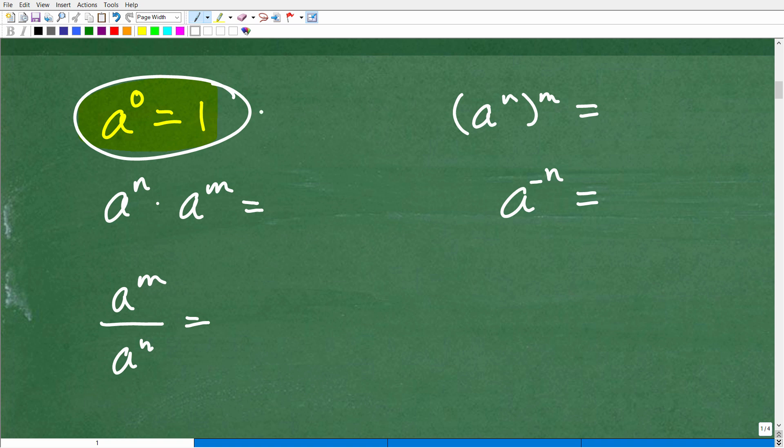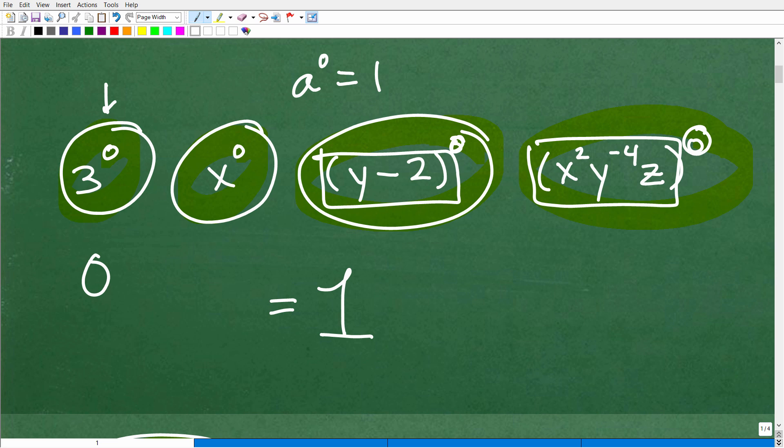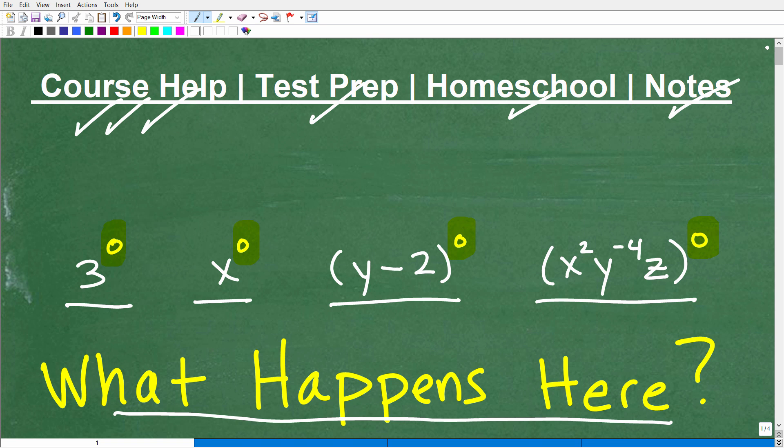a to the 0 power is not 0. Okay, a lot of students will say, oh, I remember the answer. It's 0. No, it's 1. Okay. All right. So hopefully, you know, that will sink in and you'll retain that information.